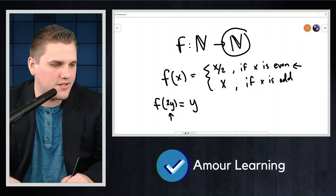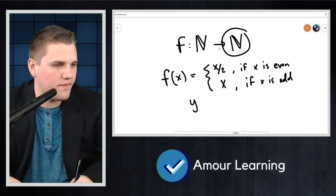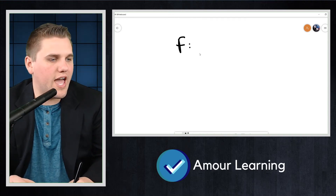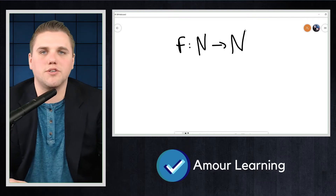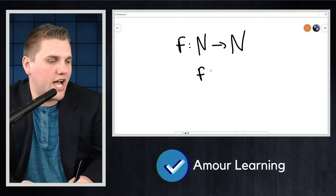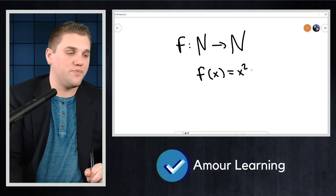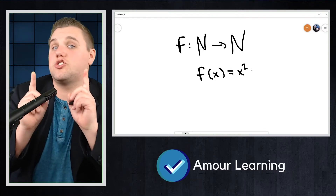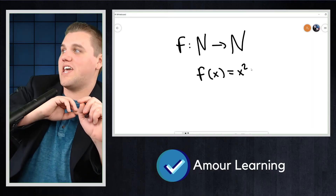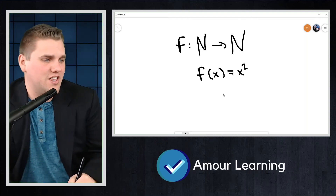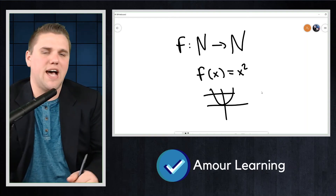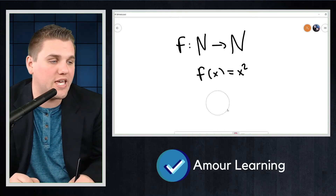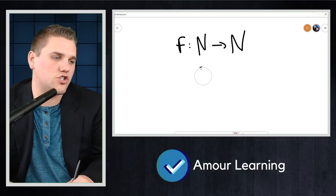Let's look at another function from the natural numbers to the natural numbers: f(x) = x². Is this function injective? It's easy to make the classic mistake of saying no — it doesn't pass the horizontal line test, since it looks like a parabola. But that's wrong, because our domain is not all real numbers; it's the natural numbers. So f(negative one) doesn't make sense — negative one is not a natural number.